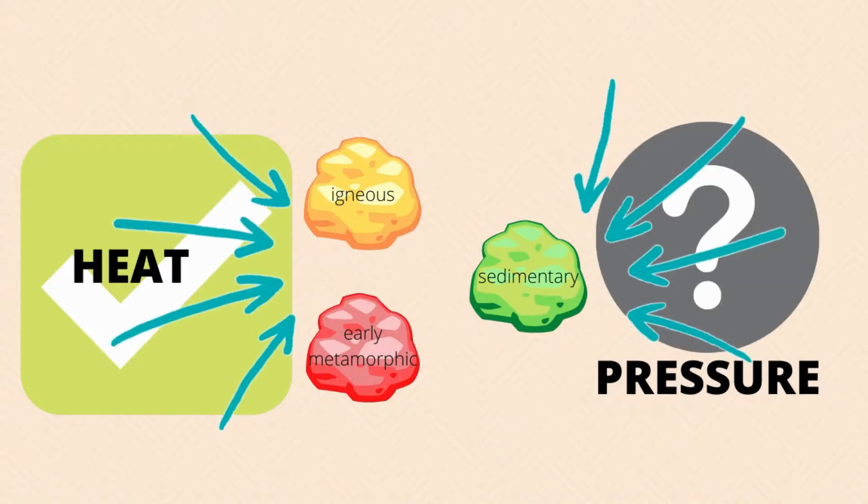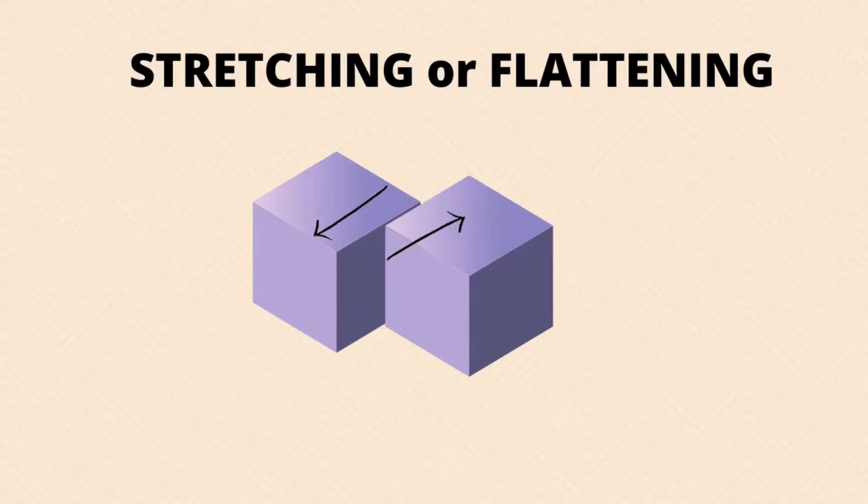Now what about pressure? If a rock is caught between two moving land masses, it puts great pressure on this rock and it can stretch out the minerals or even flatten the minerals that are in this rock, and again it changes the structure and composition of this rock.